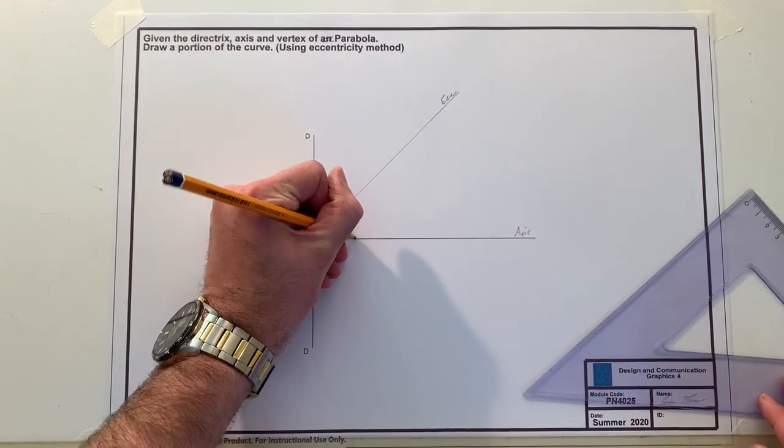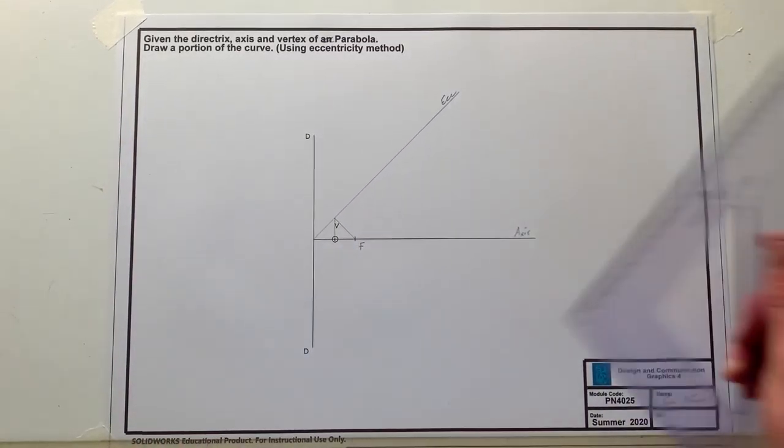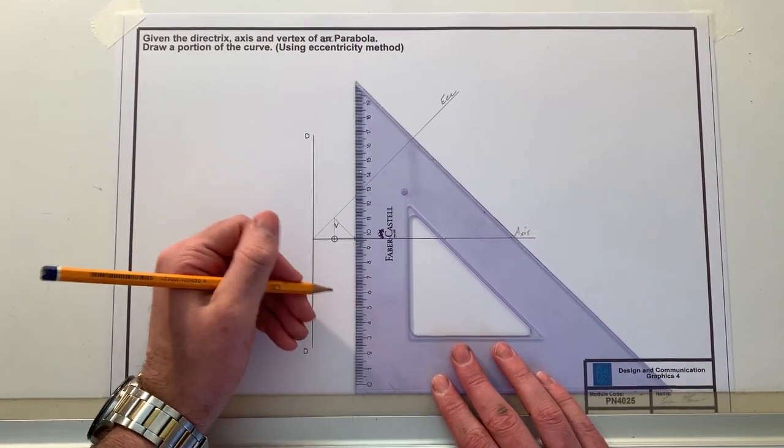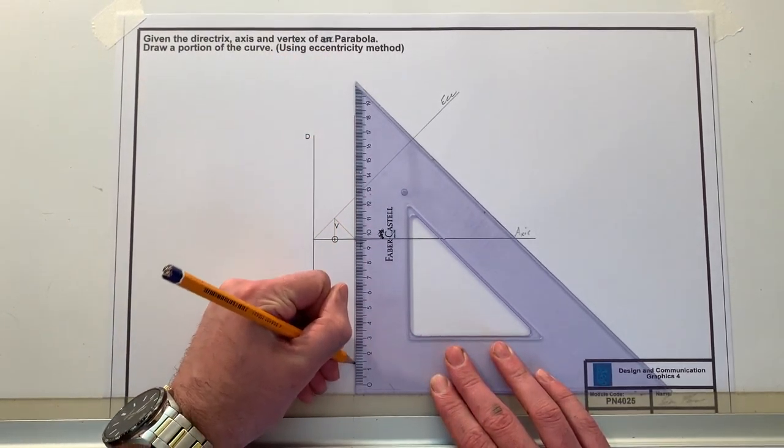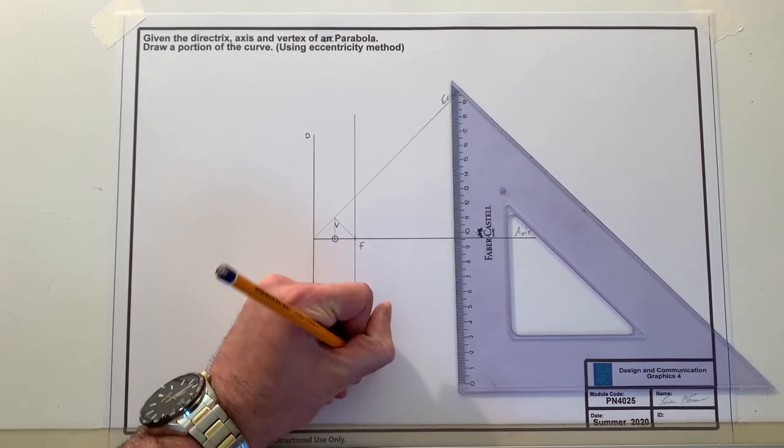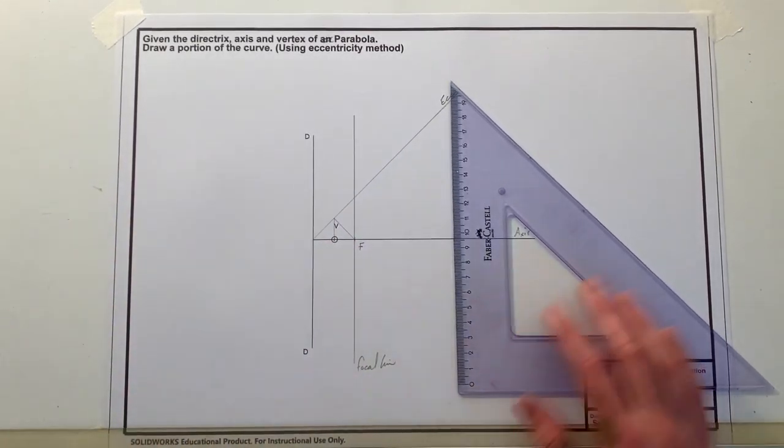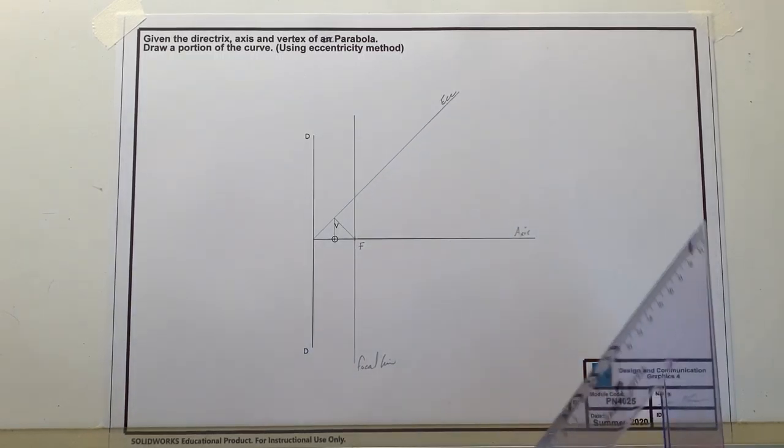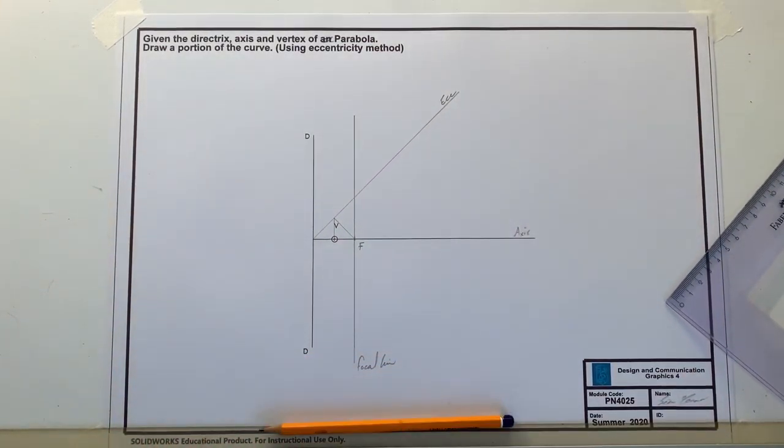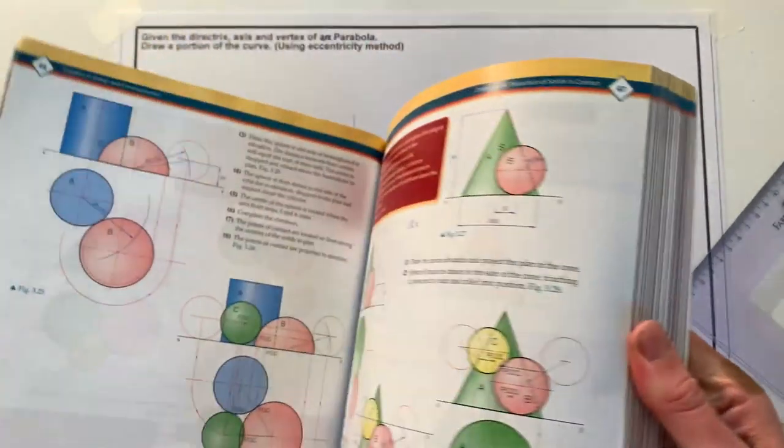We come back at 45 degrees like so to our axis and that gives us our focus. Now what we can also do is draw our focal line, so name our focal line. And now what we can do is we can use our eccentricity method which will be in the book so I'll carry it out here to show you quickly.